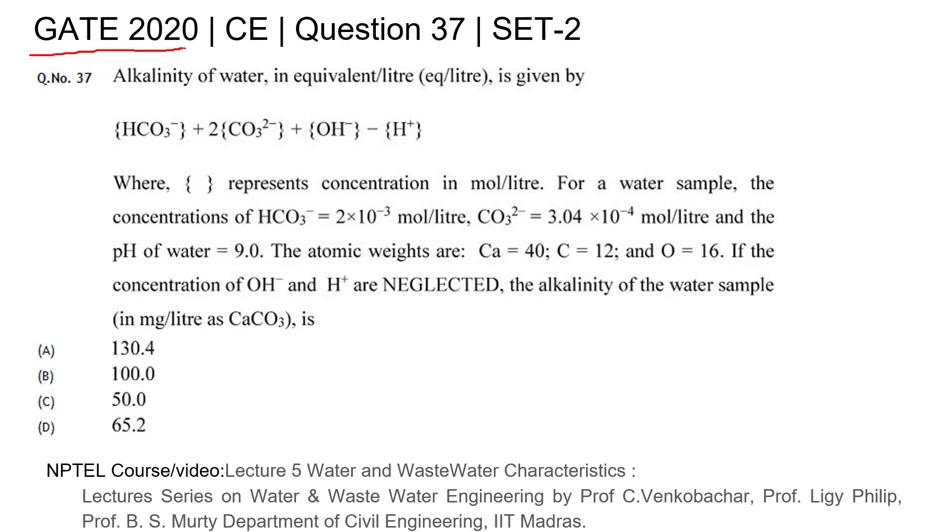GATE 2020 Civil Engineering question number 37, SET-2. Question 37 says that alkalinity of water in equivalent per liter is given by HCO3 minus plus 2×CO3 minus 2 plus OH minus minus H plus. This equation they have given, where the brackets represent concentrations.